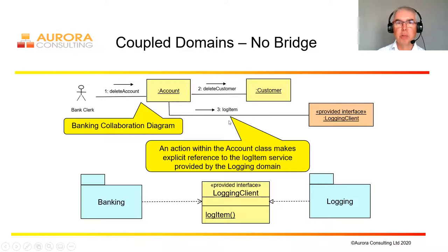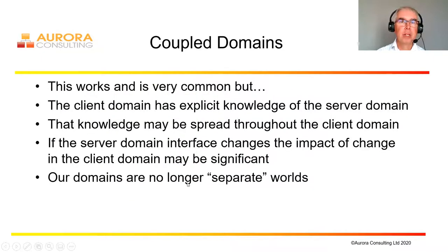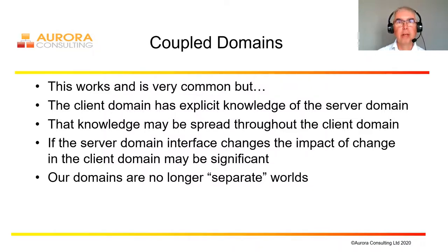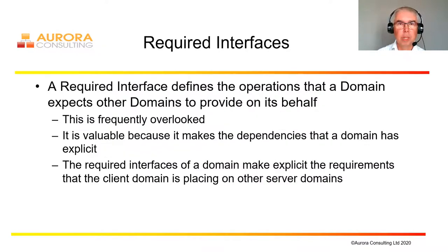Notice we have changed our subject matter reference — here we're talking about 'logging item', whereas what we wanted to talk about was 'record account closure'. This is possible and would be represented using the provided interface diagram, which is straightforward and simple. However, this idea of coupled domains works and is very common, but the client domain has explicit knowledge of the server domain. It's very common that there will be multiple uses of the services of a provided interface by the client domain, and therefore knowledge of the server domain will be spread throughout the client domain. We've undermined our idea of keeping the worlds separate — we have now polluted knowledge of one domain into another. So can we do any better than that?